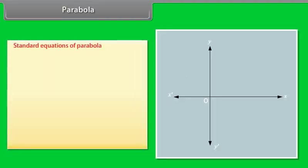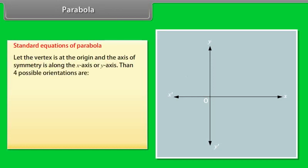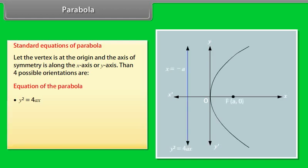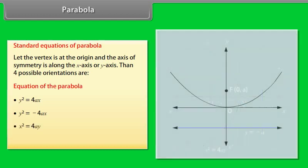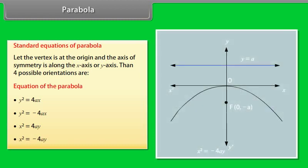Standard equations of parabola. Let the vertex be at the origin and the axis of symmetry along the x-axis or y-axis. Then four possible orientations are: y² = 4ax, y² = −4ax, x² = 4ay, and x² = −4ay.